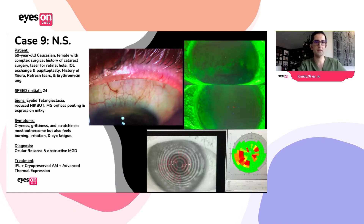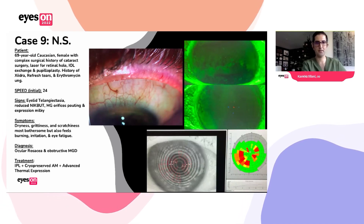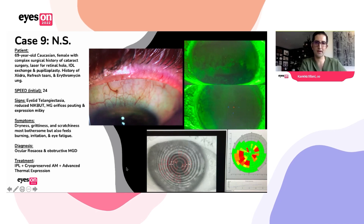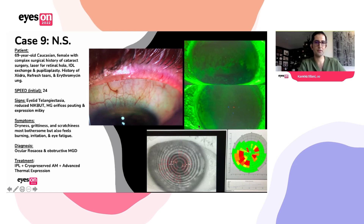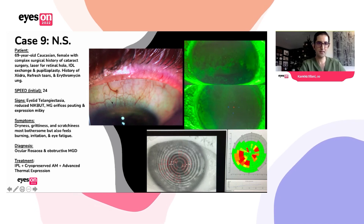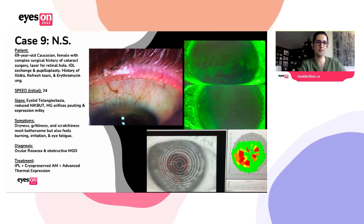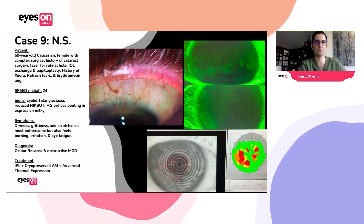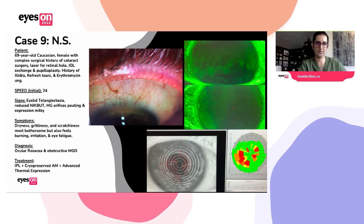Here's a 69-year-old female where the ocular rosacea really jumps out at you in the high-definition images of her eyelids and ocular surface. We can also see the reduced tear breakup time from the image. We treated her with Prokera, thermal pulsation, and IPL. She's been seeing us for a few years now and doing a lot better—she was referred by one of our local refractive surgeons.